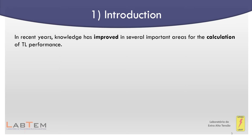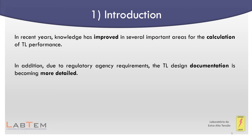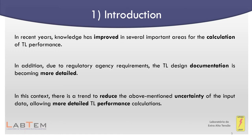In recent years, knowledge has improved in several important areas for the calculation of transmission line performance. For instance, in the characterization of soil and grounding electrodes for impulse currents and in obtaining better estimates for the lightning ground flash density. In addition, due to regulatory agency requirements, the transmission line design documentation has become more detailed. In this context, there is a trend to reduce the above-mentioned uncertainty of the input data, allowing more detailed transmission line performance calculations.